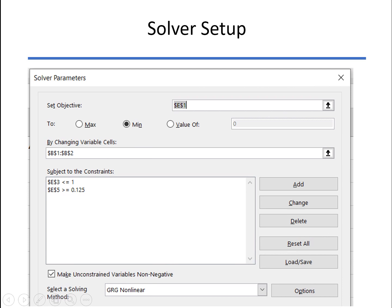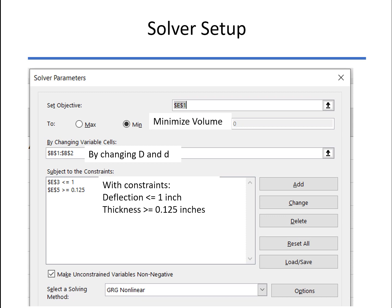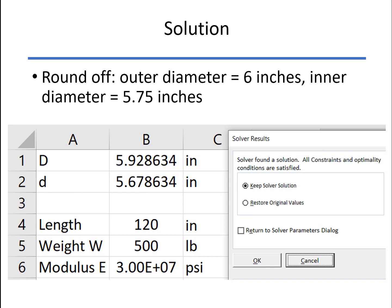So here's our Solver setup. We want to minimize the volume by changing outer and inner diameter with the constraints: deflection less than or equal to an inch, thickness greater than or equal to one eighth of an inch, and our two independent variables both positive. And so now all we've got to do is click Solve, and there's our answer.